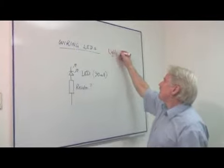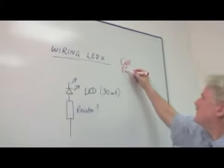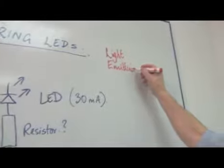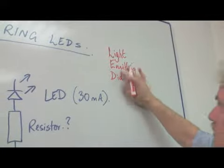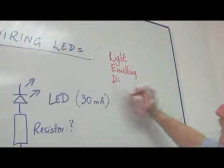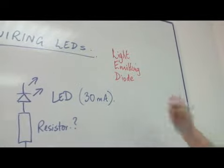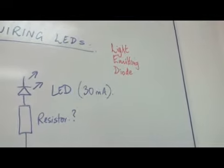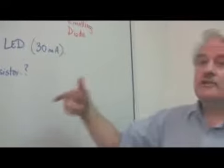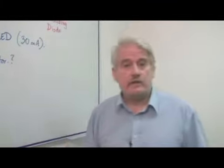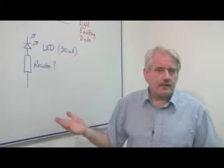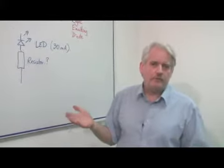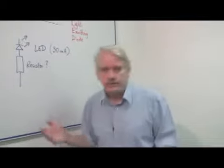LED stands for light emitting diode. Now a diode is a device which allows electric current to pass through it only in one direction. So it has a certain amount of safety in it that if you connect it the wrong way around it actually isn't going to do very much.